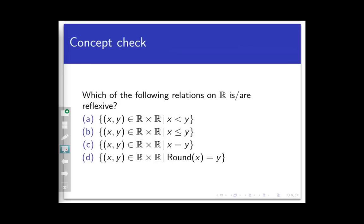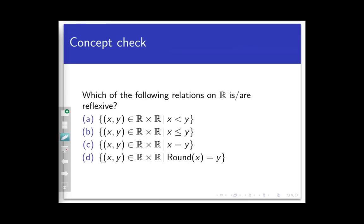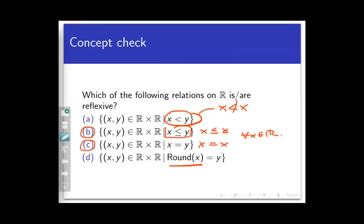Here's a concept check: given a number of relations on the set of real numbers, which are reflexive? The reflexive ones are the less-than-or-equal-to relation and the equals relation. Every number X is less than or equal to itself, and every number X equals itself. The strictly-less-than relation is not reflexive because no number X is strictly less than itself. The rounding relation is not reflexive because, while 5,5 is in the relation, 4.2,4.2 is not — since 4.2 rounds up to 5, not to itself. To be reflexive, every point in the set must be related to itself.